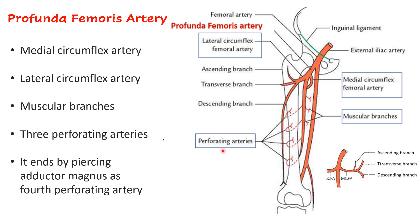Then we have the perforating arteries — so named because they perforate the insertion of a muscle. There are three perforating arteries, and a fourth which is really the continuation or end of the profunda femoris artery. These perforating branches arise from the profunda femoris artery, pierce the adductor magnus muscle near its insertion, and run along the posterior compartment of the thigh.